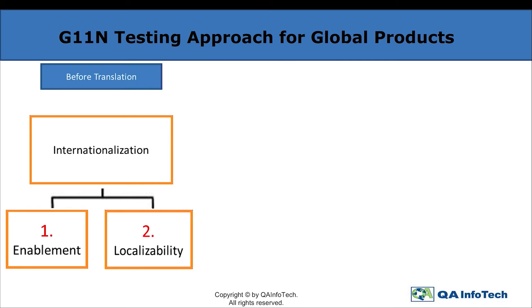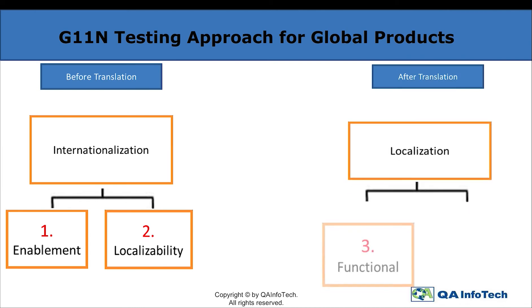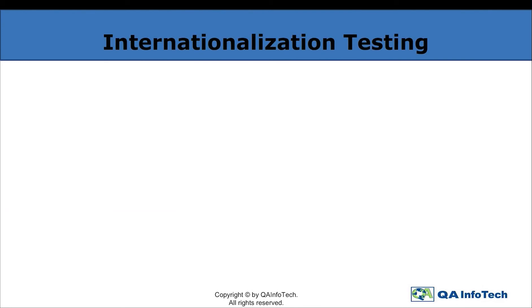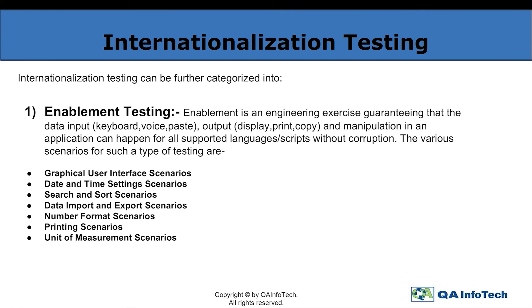In the second phase, an application is tested after translation, wherein localization covers the functional and linguistic aspects of an application, which will be covered in detail later in this video. Coming on to internationalization testing — it consists of two types. The first being enablement testing, wherein we basically test the application by putting localized test data in all input fields, followed by analyzing the output